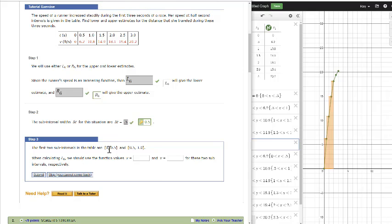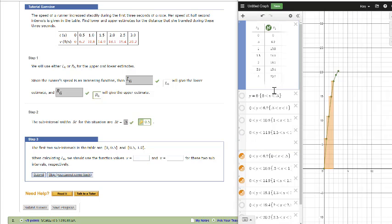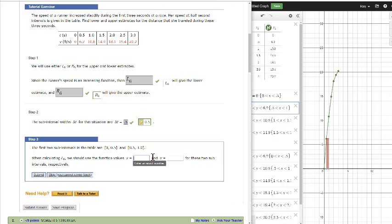Now the first two subintervals between 0 to 0.5 and 0.5 to 1, when calculating the left-hand endpoint, the first value, so we're looking at the left-hand endpoints. These are the left-hand endpoints. The first value that we get is 0 from 0 to 0.5. From 0.5 to 1, the value that we get is whatever this value is at 0.5, which is 6.2. So our first value is 0, our second value is 6.2.